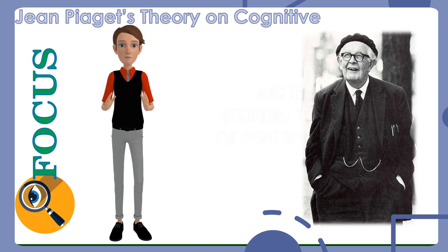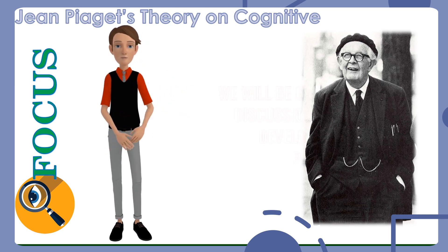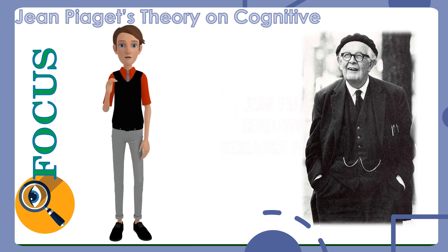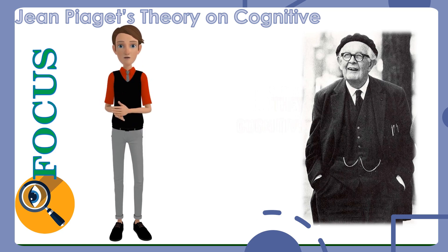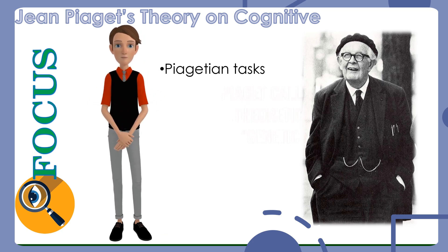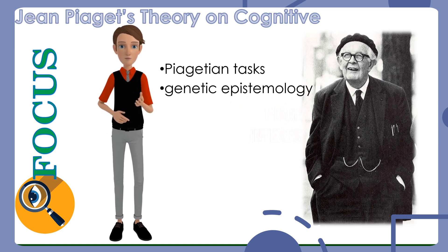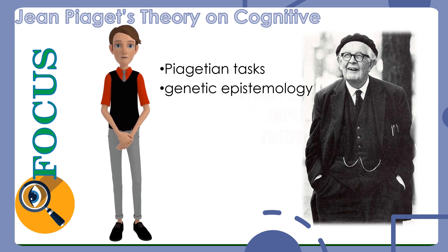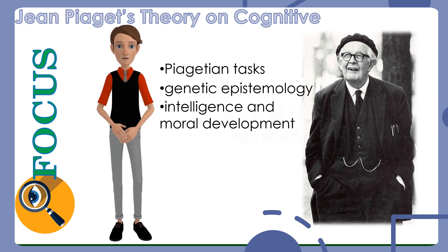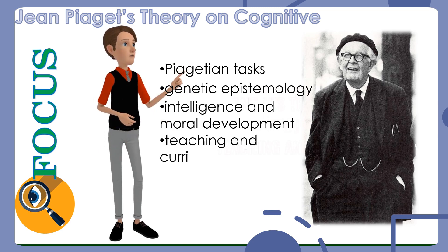Having discussed the brain and the neuron, it is beneficial to learn about the development of human cognition. We will be grounding our discussion on Jean Piaget's theory. Piaget conducted cognitive development research for 60 years. His research method involved observing a small number of individuals as they responded to cognitive tasks that he designed, later referred to as Piagetian tasks. Piaget called his general theoretical framework genetic epistemology because he was interested in how knowledge developed in human organisms. He also had a background in biology and philosophy, and his theory has been widely applied to teaching and curriculum.